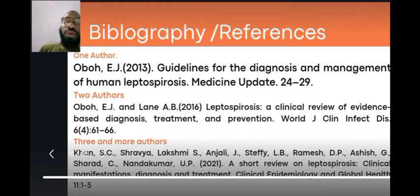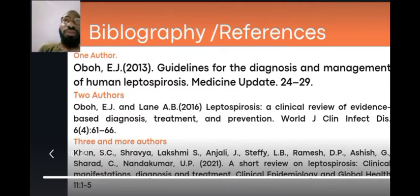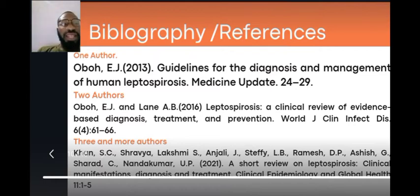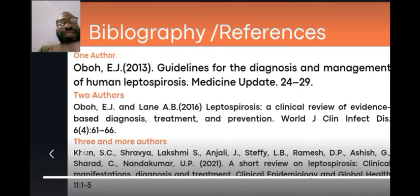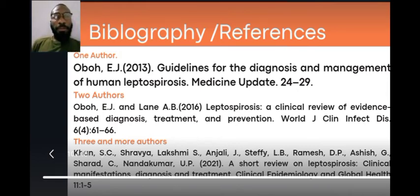For three or more authors, you list all the authors' names — some schools require writing five names then adding 'et al.', while others ask you to write all of them. Then follows the article title, the journal name, the volume, and the page numbers. Follow your institution's specific requirements.